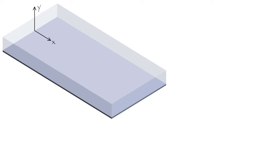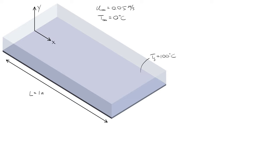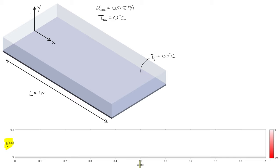We'll be looking at a number of different fluids in this screencast, but in all cases the speed of the fluid far away from the plate is going to be U infinity, and we'll set that equal to 0.05 meters per second. The temperature of this fluid far away from the plate we'll call T infinity, and we'll set that to zero degrees C. The temperature of the plate at the surface is going to be 100 degrees C. We'll call the length of our plate L, and we'll set that equal to one meter. We'll explore graphs with Y on the vertical axis and X on the horizontal axis, with the vertical axis ranging from zero to 0.1 meters.